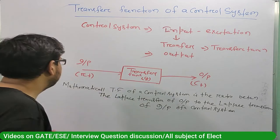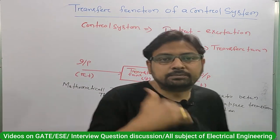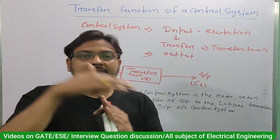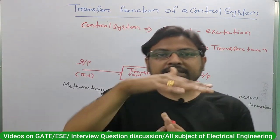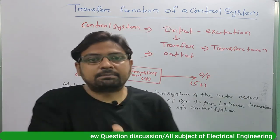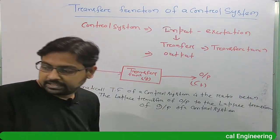This is the definition of my transfer function of a control system: it is the ratio between the Laplace transform of the output and the Laplace transform of the input.